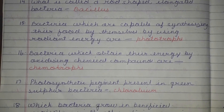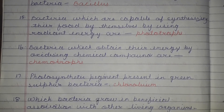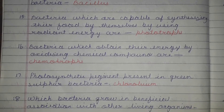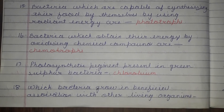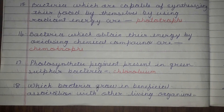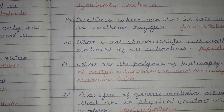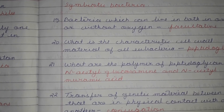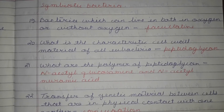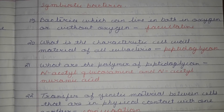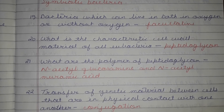The photosynthetic pigment in green sulfur bacteria is Chlorobium. Bacteria which grow in beneficial association with others are symbiotic bacteria. Bacteria which can live both in the presence or absence of oxygen are called facultative bacteria.